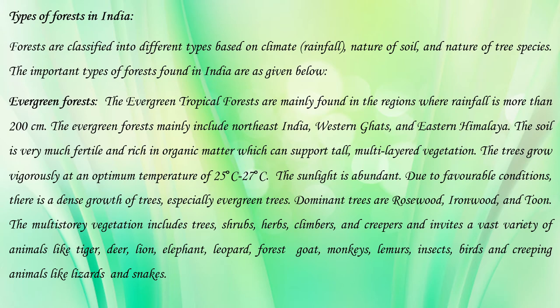First, evergreen forest — from the name itself it is clear these are forests which have trees with evergreen leaves. Evergreen forests are mainly found in regions where rainfall is more than 200 cm. They mainly include northeast India, western ghats, and eastern Himalaya. Soil is very fertile and rich in organic matter, supporting tall trees and multi-layered vegetation. Trees grow vigorously at an optimum temperature of 25 to 27 degrees Celsius with abundant sunlight.